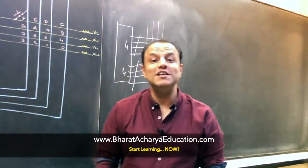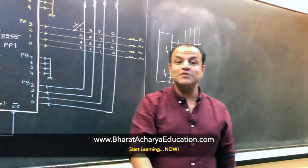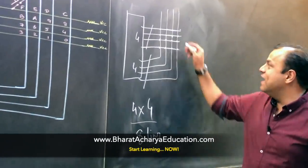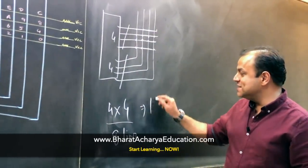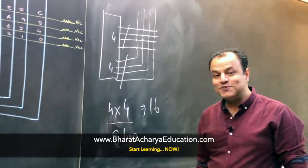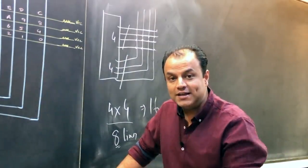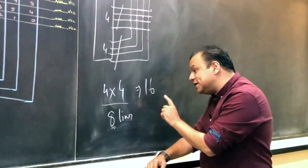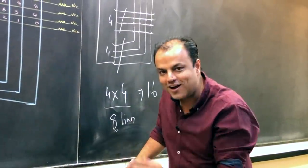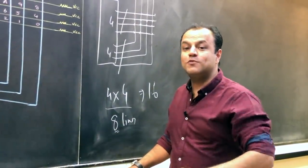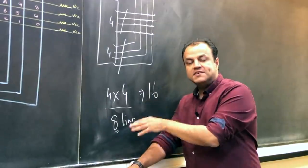If you plant a key on every intersecting point, reading the row and the column, identifying the row and the column, you can still come to know which key was pressed. Your purpose is solved. How many keys are you getting? 16 keys. How many lines are you using? Only eight lines. Otherwise eight lines would have given you eight keys. Here eight lines are giving you 16 keys, so you are getting more keys using less number of lines.